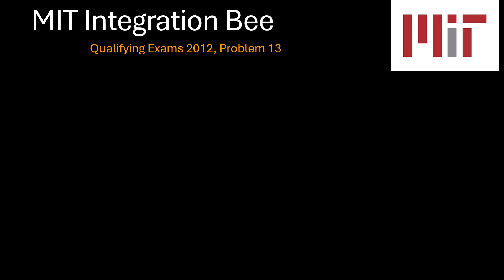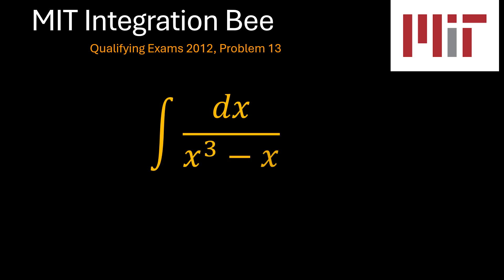Problem 13 of MIT integration B qualifying exam, number 712: the indefinite integral of 1 over x cubed minus x. This is a very easy problem. Let's see how we solve it.